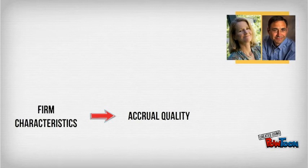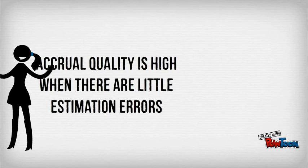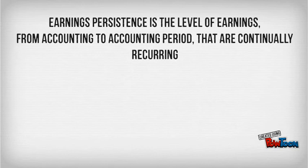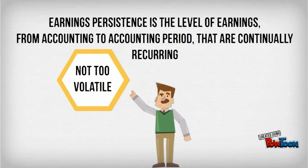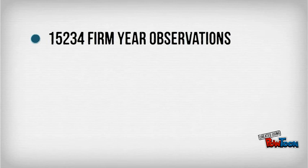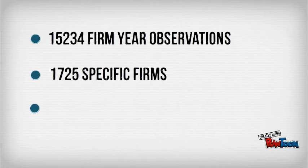So what is their research exactly about? They investigated which characteristics of the firm are good predictors for accrual quality, and what exact relation accrual quality has with earnings persistence. For your information, accrual quality is high when there are little estimation errors — so when our lovely Jenny is able to estimate the accounts receivable properly. Earnings persistence is a level of earnings from accounting period to accounting period that are continually recurring. For investors like Barry, it's important that the earnings are not too volatile. Chow and Chen conducted their investigation using 15,234 firm-year observations of 1,725 specific firms, starting in 1987 to 1999.